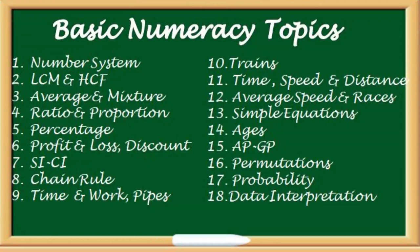In basic numeracy, these are 18 topics: number system, LCM and HCF, average and mixtures, ratios and proportions, percentage, profit, loss and discount, SI/CI, chain rule, time and work, trains, time, speed and distance, average speed, simple equations, ages, AP and GP, permutation and combination, probability, and data interpretation.